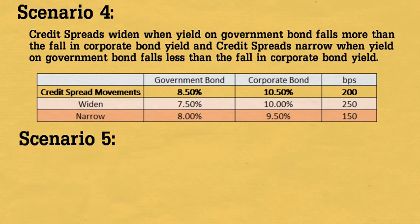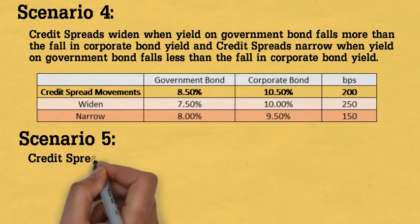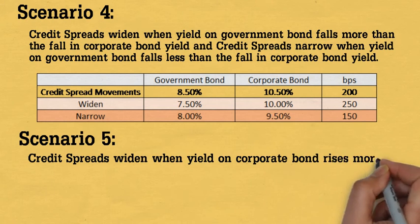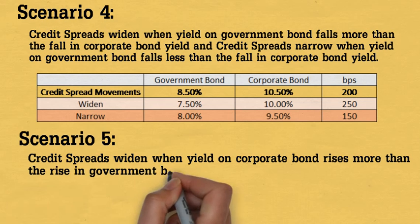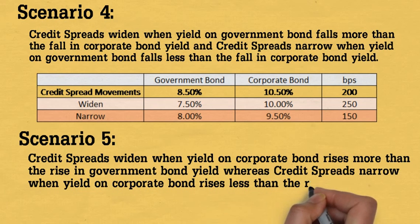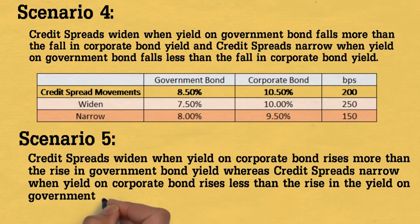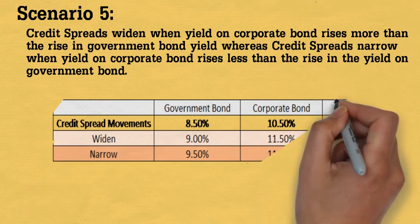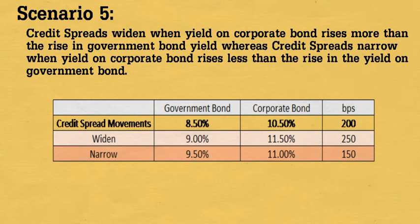Scenario 5. Credit spread widens when the yield on the corporate bond rises more than the rise in the government bond yield, whereas credit spread narrows when the yield on the corporate bond rises less than the rise in the yield on the government bond.